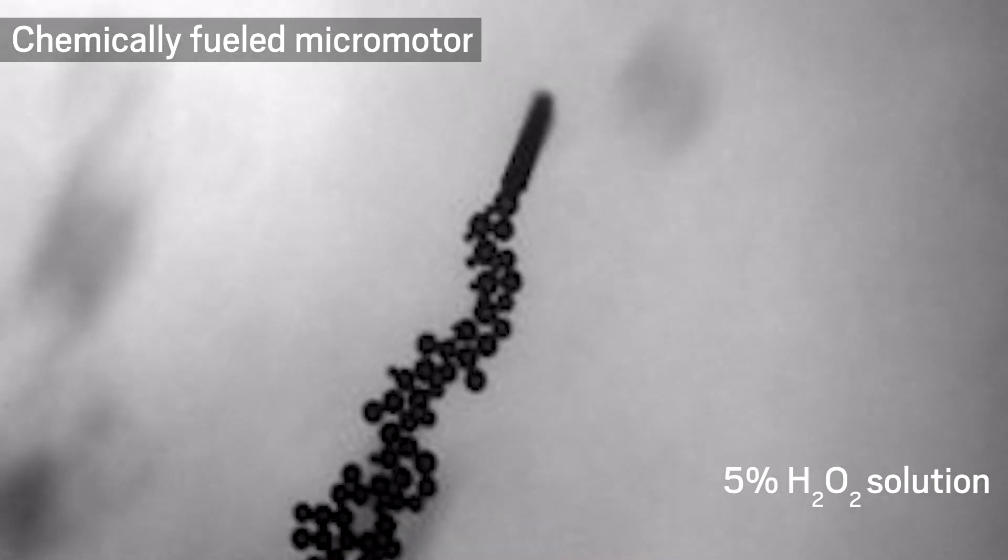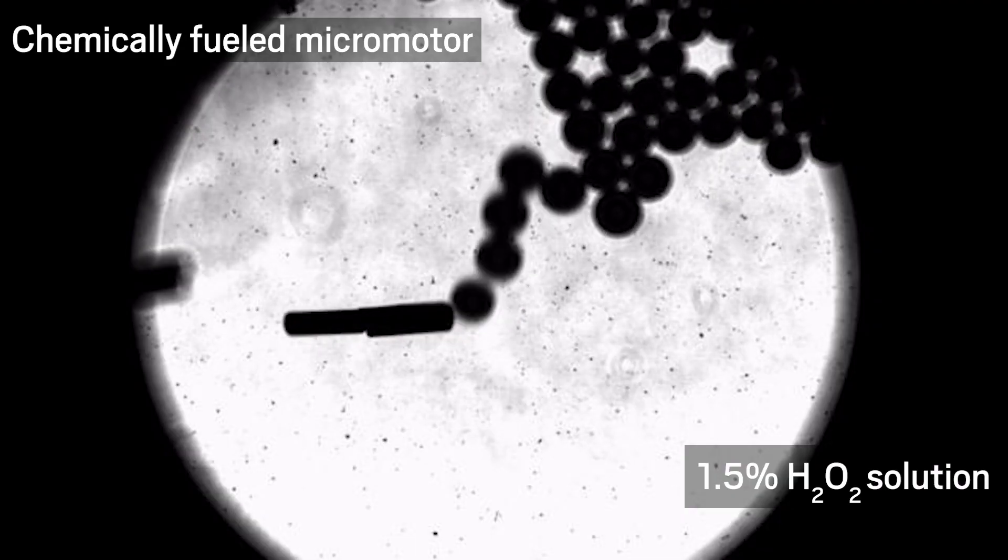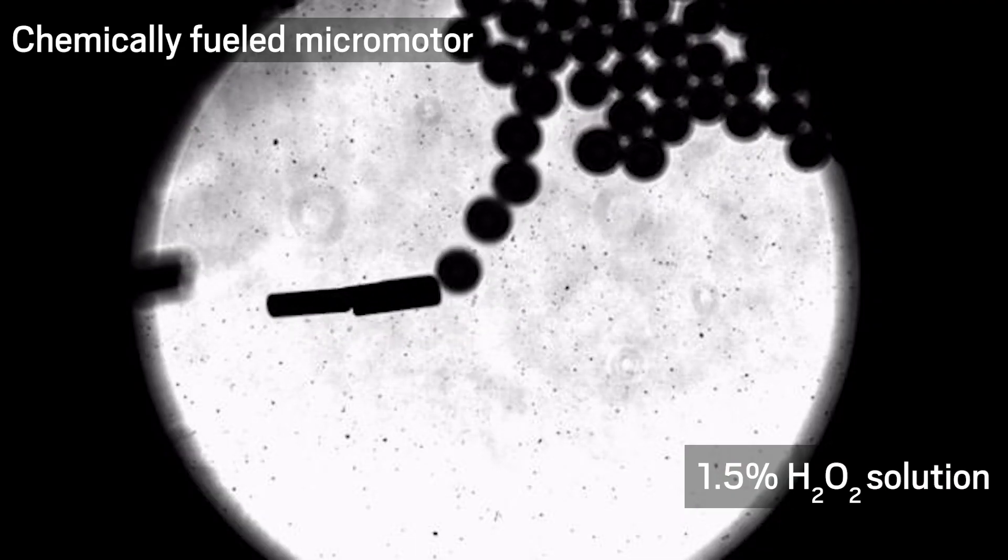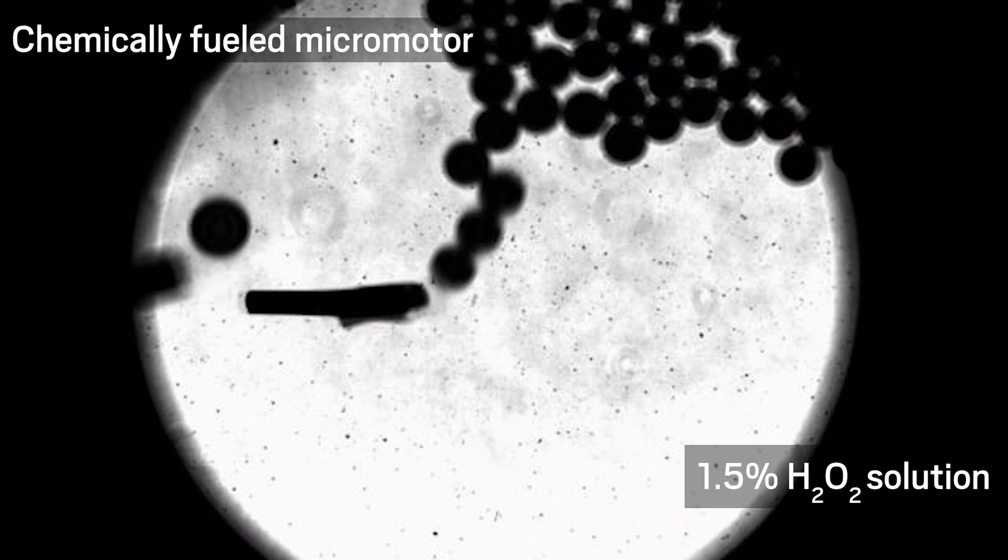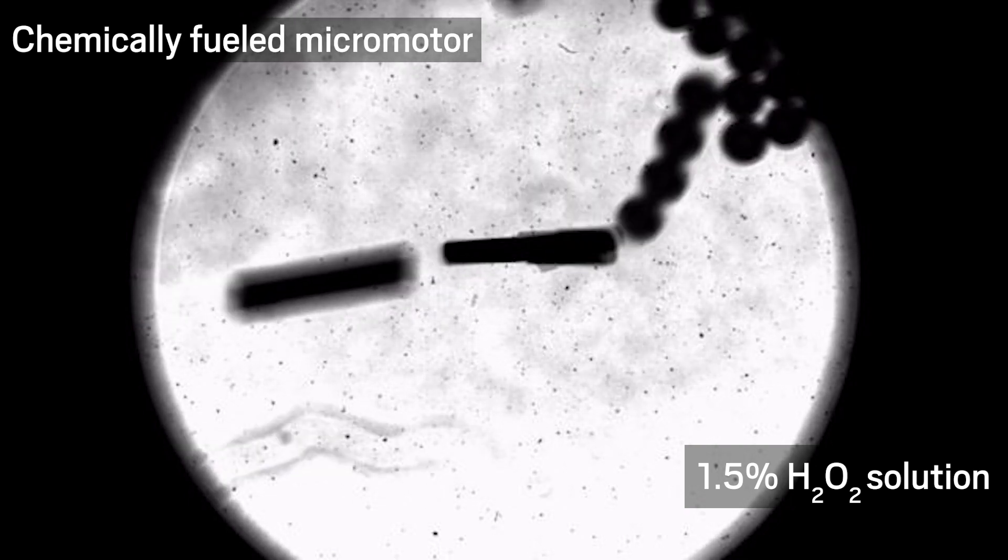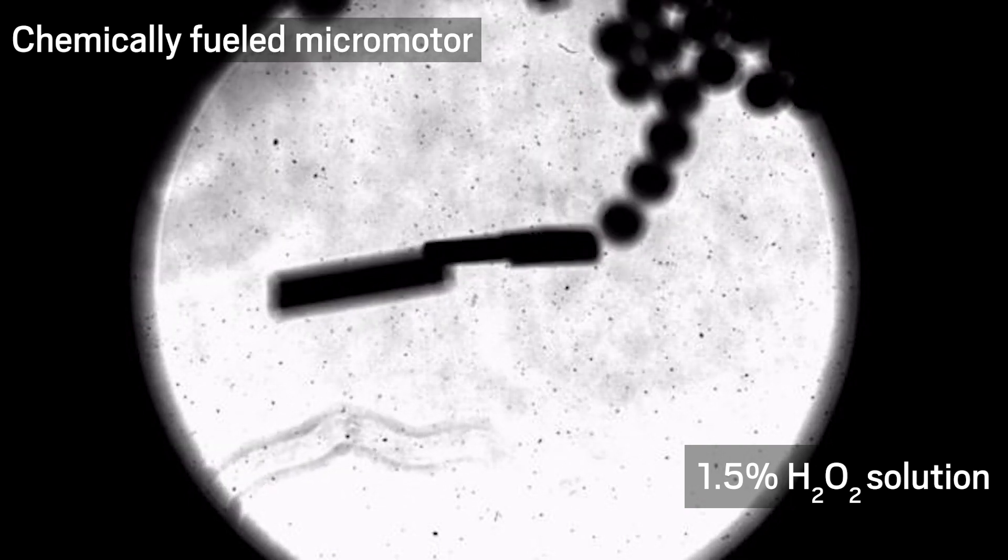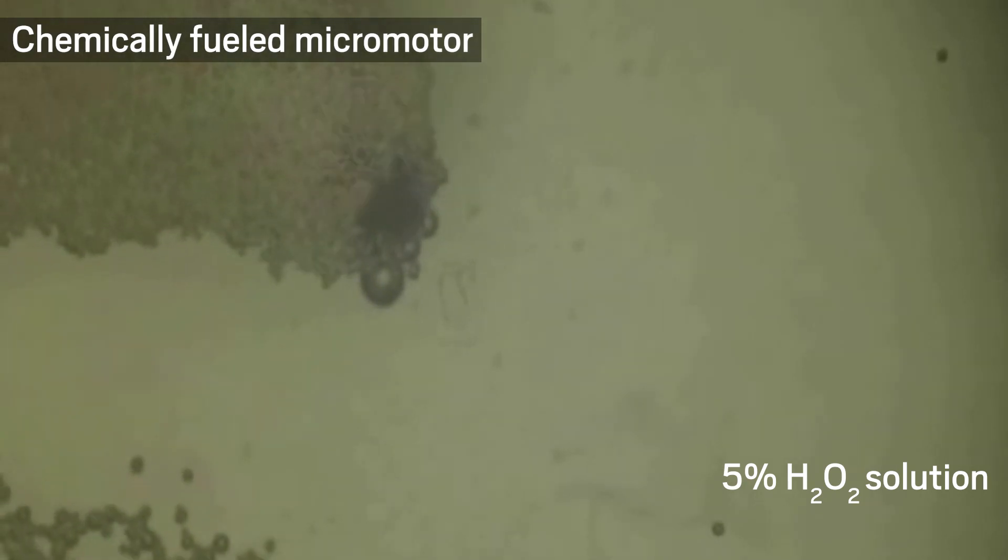Micromotors can propel themselves in a number of ways. A popular way to get around is to use a chemical fuel such as hydrogen peroxide. Materials in the micromotors react with the fuel to produce jets of gas bubbles that push the tiny particles forward. But this approach can introduce toxic compounds into the motor surroundings.